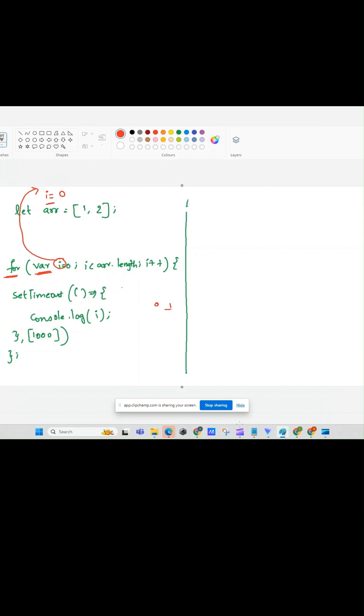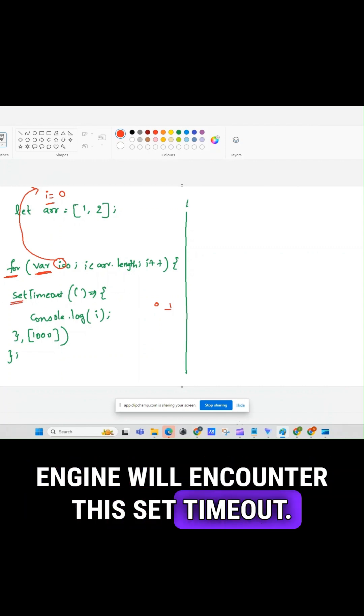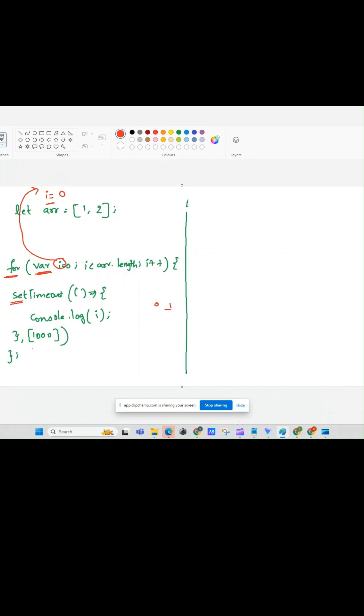During the initial iteration of this for loop, JavaScript engine will encounter this set timeout, but this set timeout will execute only after 1 second. Until then, where it will wait? It will wait in the task queue. So this set timeout will wait until 1 second here. During this 1 second, JavaScript will continue its execution.